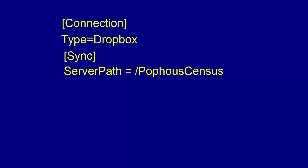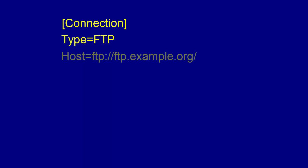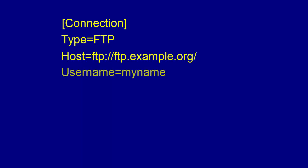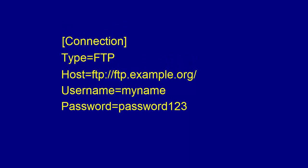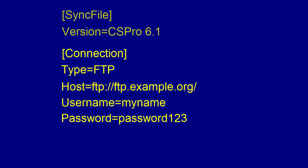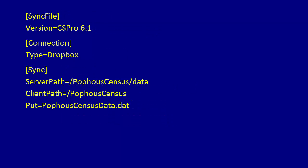For Dropbox, it is sufficient to indicate that the connection type is Dropbox. For FTP, you need to add the server URL, username, and password. Complete the .pnc file by adding a section at the beginning showing the version. Here is the completed .pnc file using Dropbox.